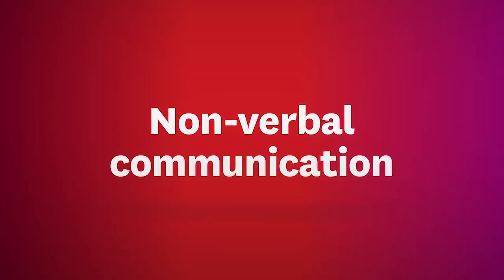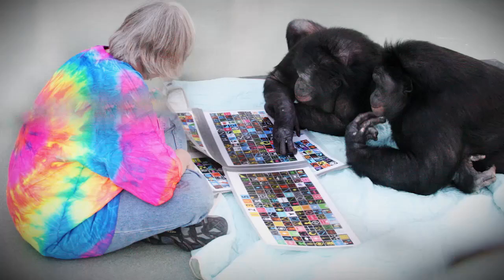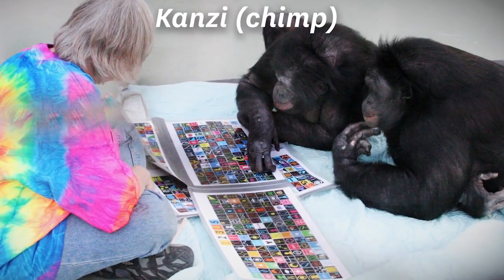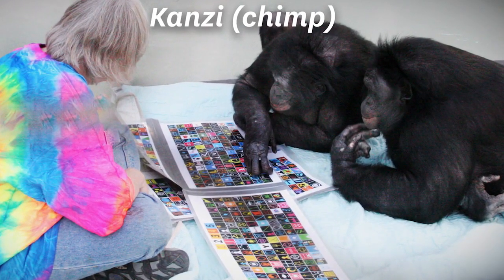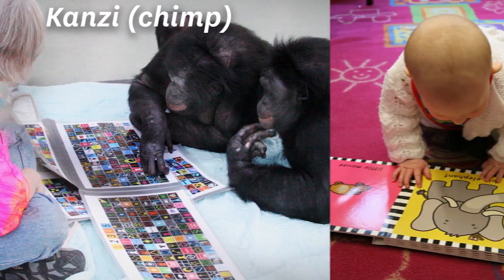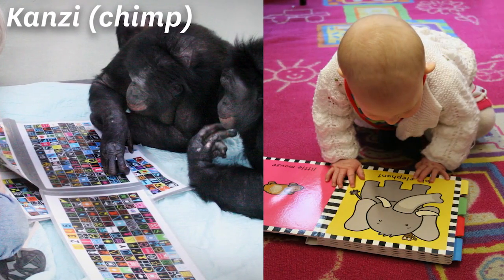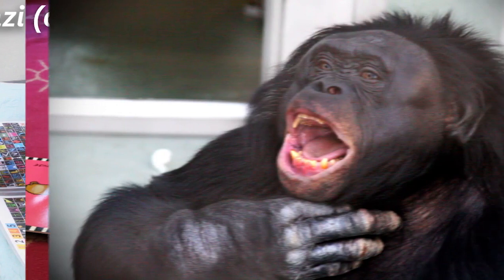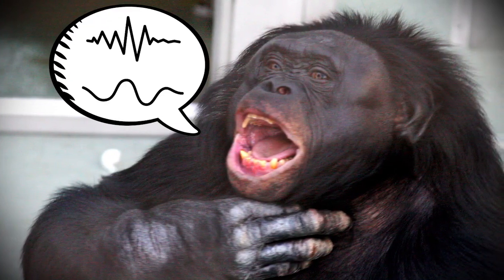What we know of other primates is that communication is also important to maintain their fairly complex social hierarchies and alliances. Chimps, for instance, are able to communicate a wide range of information, and can even be taught to recognize quite a few symbols on par with a human toddler. Their larynxes do mean that they are only able to vocalize a limited range of sounds, though.